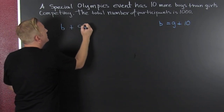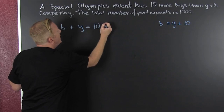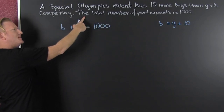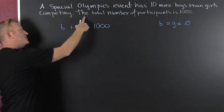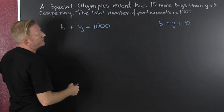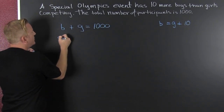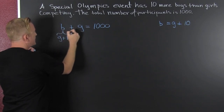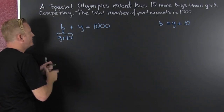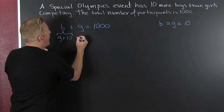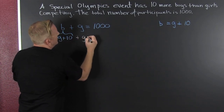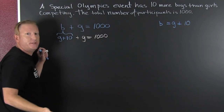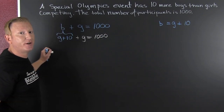So boys plus girls equals one thousand — that's what we got from the total number of participants being a thousand. But boys is girls plus ten, so we substitute: girls plus ten, add that to girls. I just made a little substitution — your book wanted you to do it with one variable.